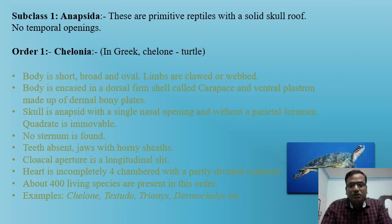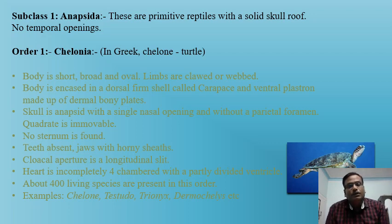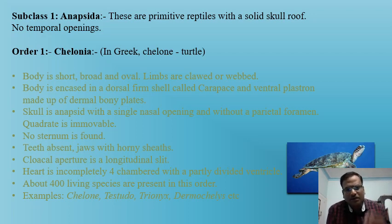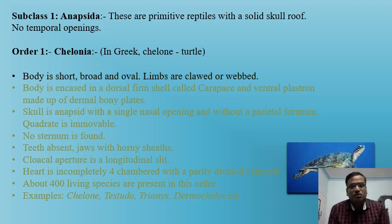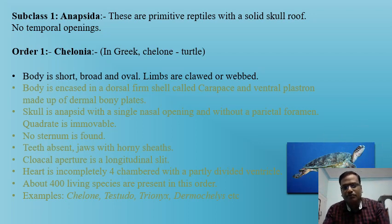The first subclass is Anapsida, which includes primitive reptiles with a solid skull roof — the temporal opening is absent. The one living order under this is Chelonia, represented by turtles. The body is short, broad, and oval; limbs are clawed or webbed — adapted for swimming — while claws are used to make burrows in the sand at the time of laying eggs.